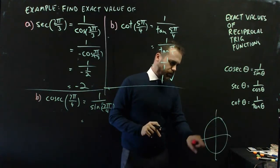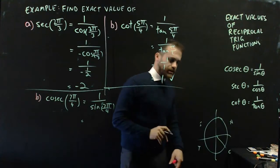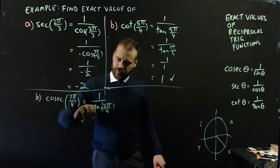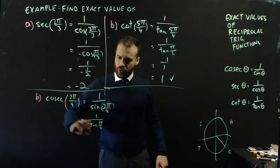π/4, 2π/4, 3π/4, 4, 5, 6, 7. It's in this quadrant here. CAST. So, it's going to be negative. So, it's going to be 1/negative sin π/4.